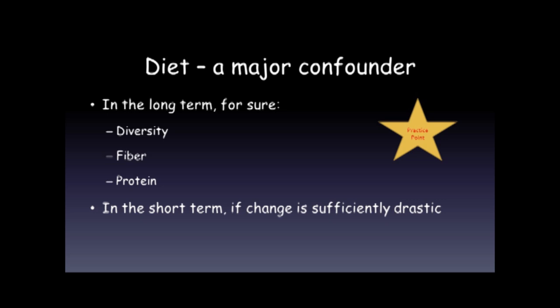In the long term, many studies show that over years your diet will alter the diversity of the microbiome. The diversity of your diet will influence your microbiome, as well as its fiber content and protein content. There is now data for fat and carbohydrate also influencing the microbiome. One of the new messages here is that in the short term, if you make a sufficiently drastic change in your diet, it will change your microbiome.